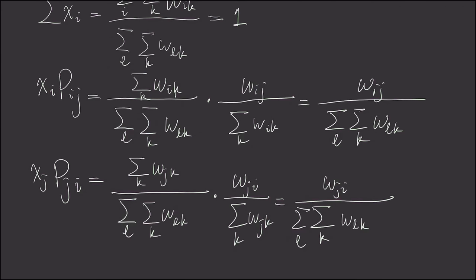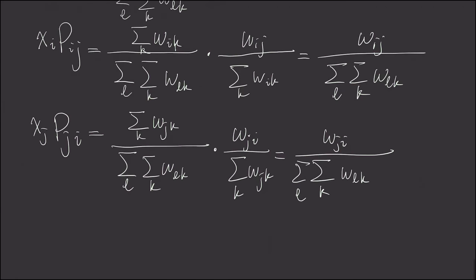And now, because we have an undirected graph, wij is the same as wji. And so, these two sums are equal. And this is the conclusion.